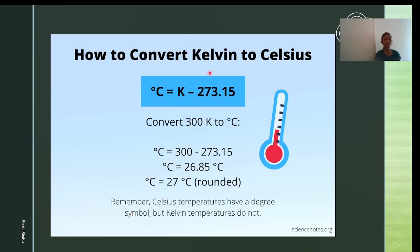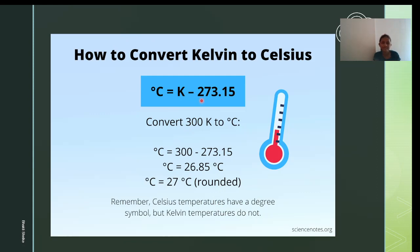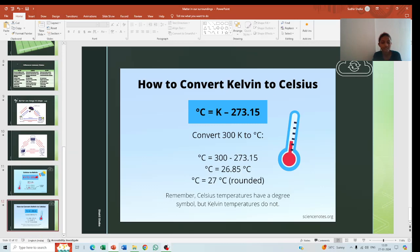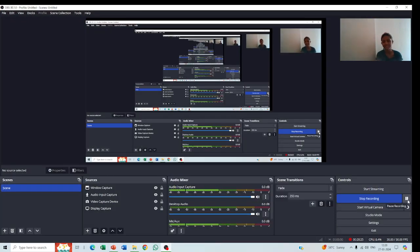To convert Kelvin to Celsius, subtract 273 from the given Kelvin value — for example, 300 K − 273 = 27°C. Remember: Celsius temperatures have a degree symbol, but Kelvin does not. Hope you liked this presentation — please subscribe to my channel for more videos like this. Thank you!